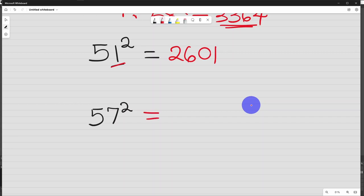57 square, half of 50 is 25. 25 plus 7 is 32. 7 square is 49. You can see how fast you can get it. So these are the answers.